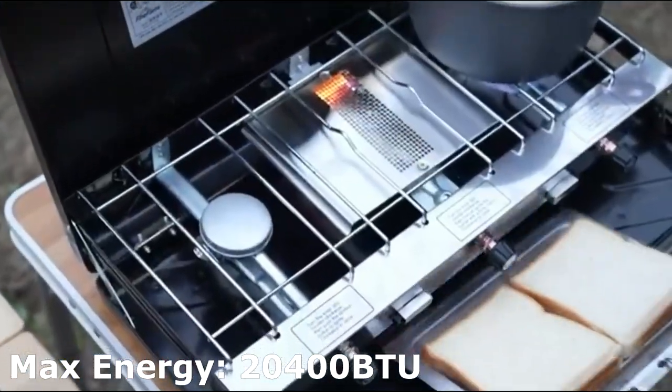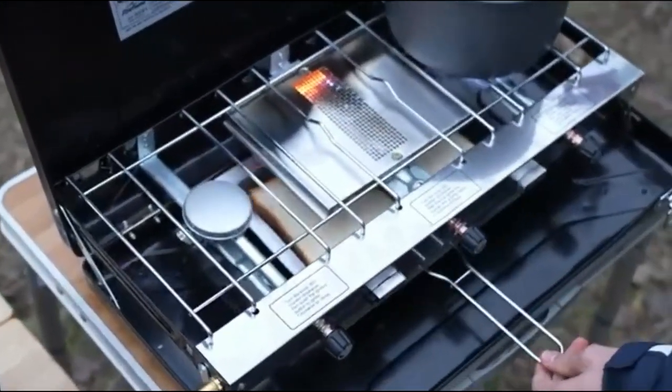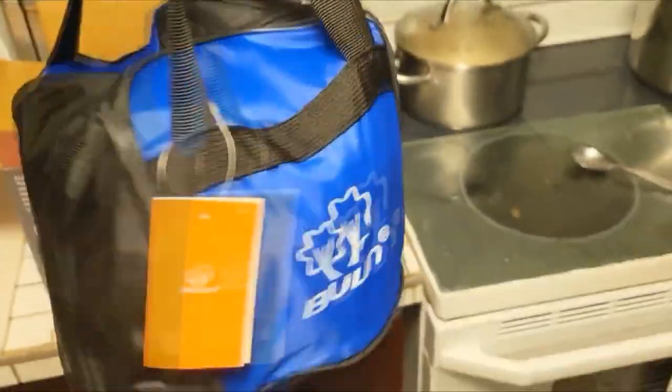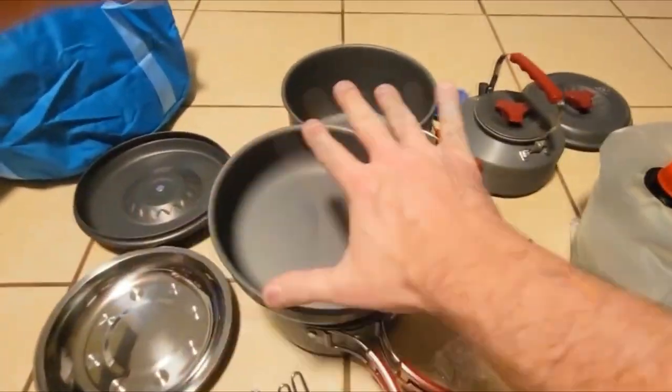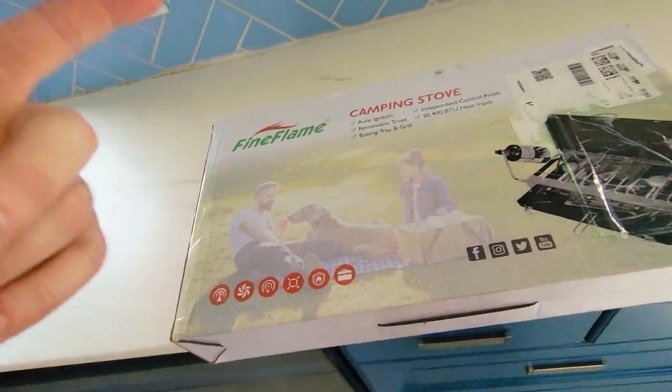It has 20,400 BTU total with three separate burners and a toasting tray. We're going to be using the Bulan camping cookware mess kit. This is a complete setup, though you will need your own butane tank. Stay tuned for the whole video.